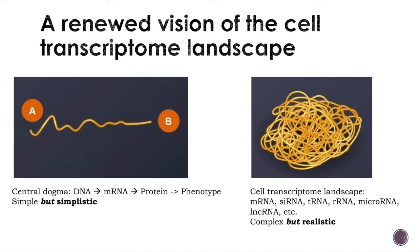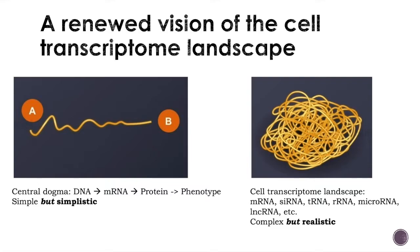While most studies focus on messenger RNA, the possibility to sequence every type of RNA in a given cell has truly renewed our perception of the wide range of RNA present. Once we had the simple central dogma — DNA to mRNA to protein — a straight line. This was simple but perhaps simplistic. Now, what sequencing approaches have given us is a renewed vision: more like a spaghetti bowl, where we truly have a cell transcriptomic landscape composed of many different types — mRNAs, small interfering RNAs, transfer RNAs, and so on — which is more complex but also more realistic.